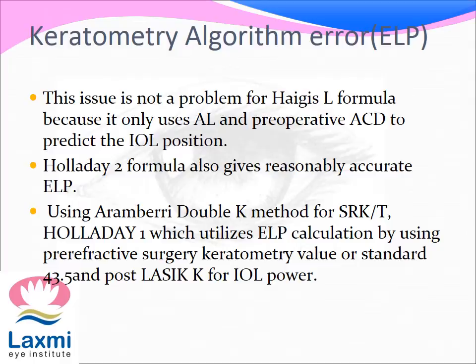This issue is not a problem for Haigis-L formula because it uses axial length and preoperative anterior chamber depth to predict the IOL position. Holladay 2 formula also gives reasonably accurate effective lens position. Using the Aramberri double-K method for SRK/T and Holladay 1 utilizes ELP calculation by using pre-refractive surgery keratometry value or standard 43.5 D and post-LASIK K for IOL power.